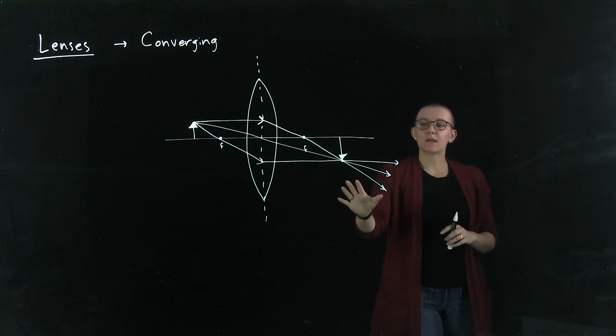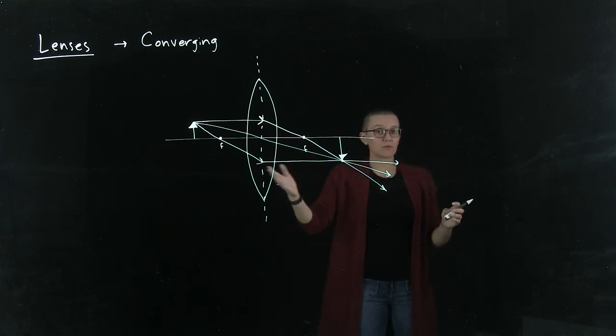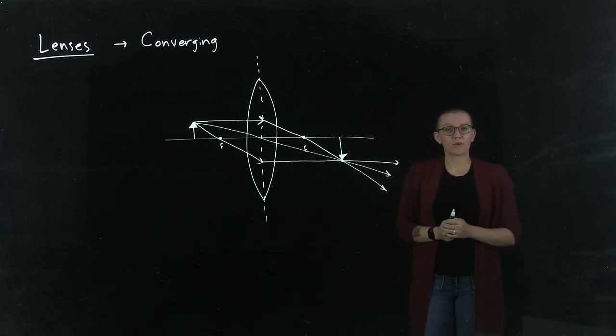So this is a real image with a positive image distance. Those are the three rays that you can draw to help you figure out where an image is located for converging lenses.